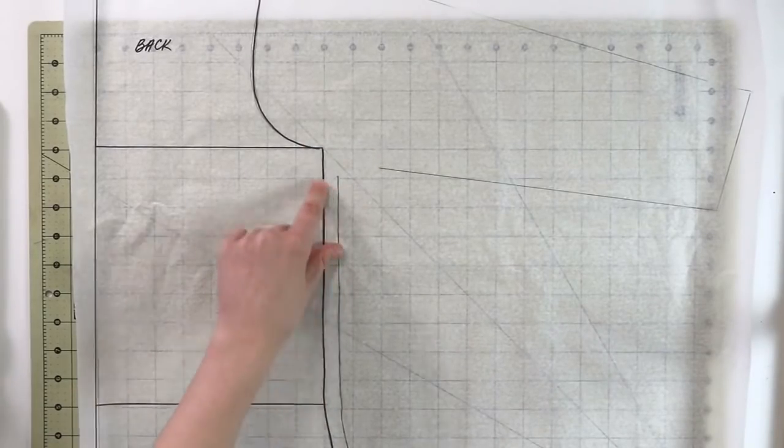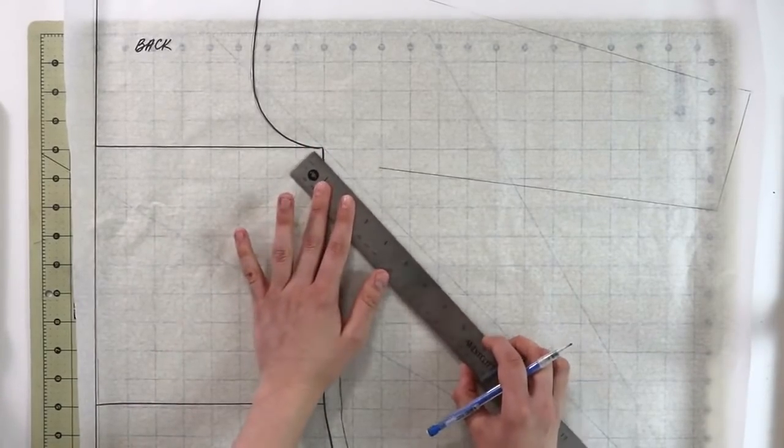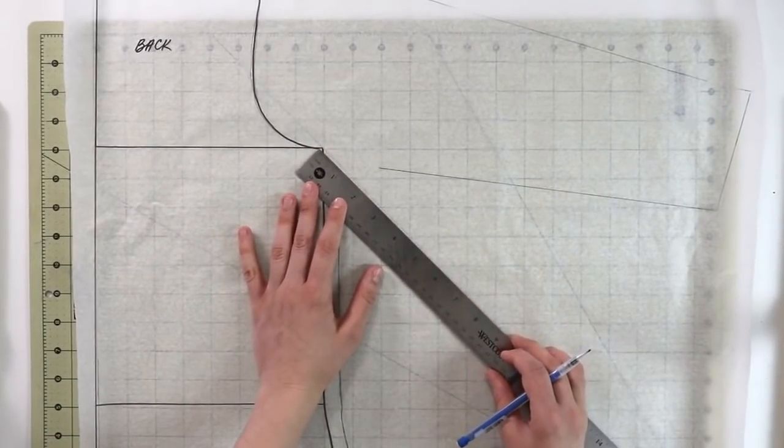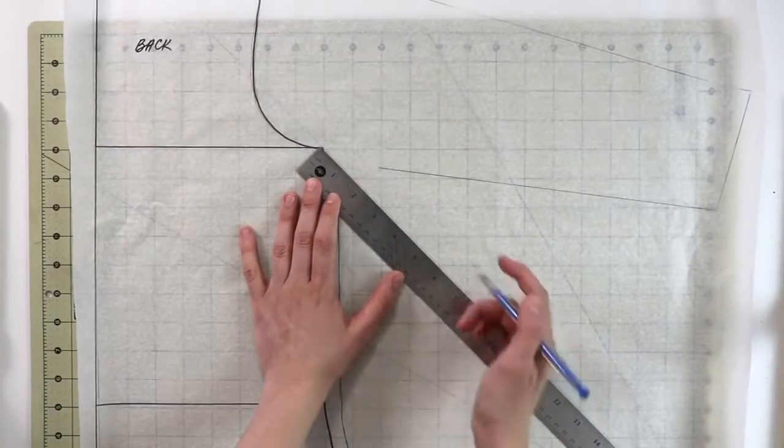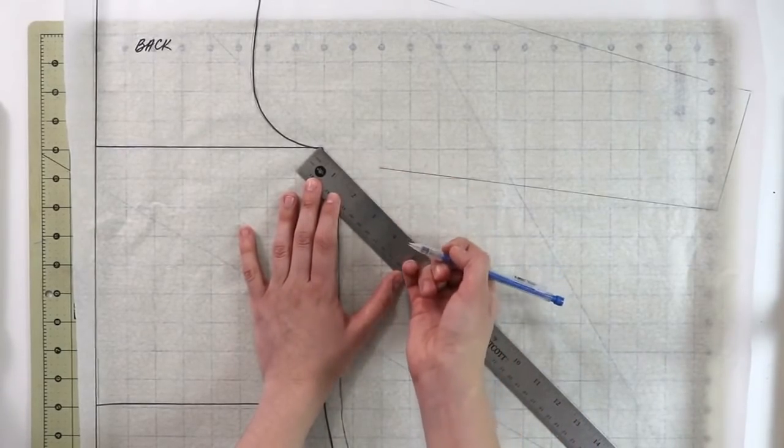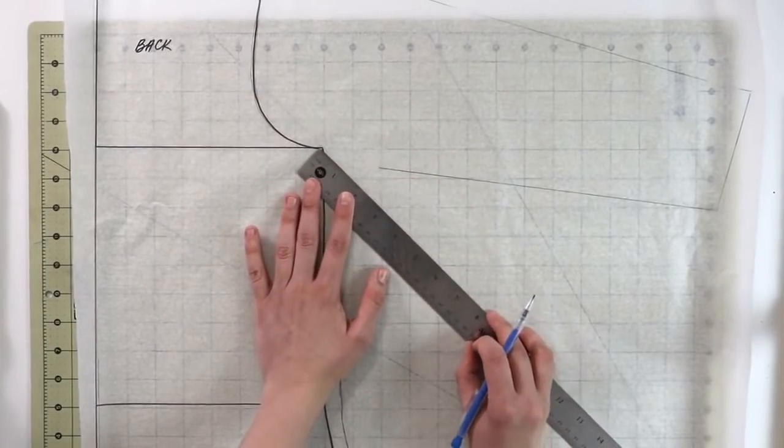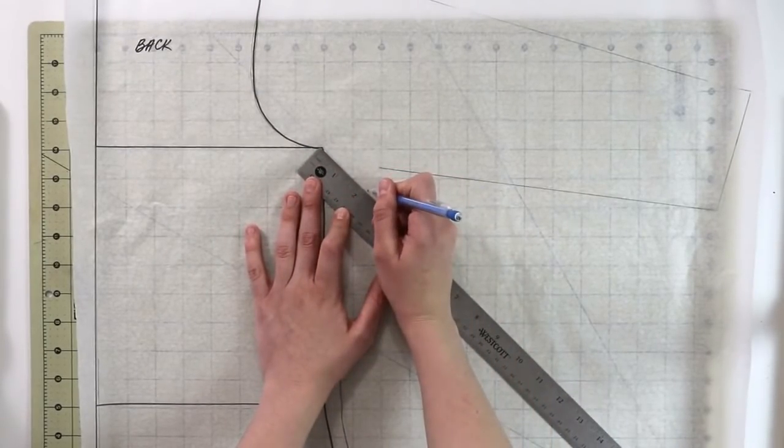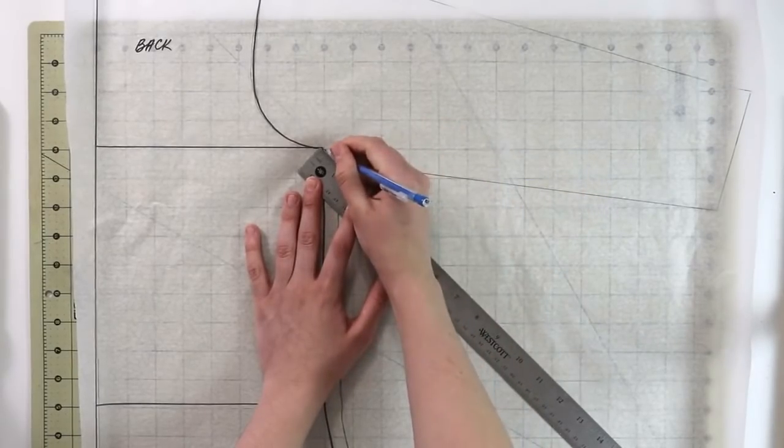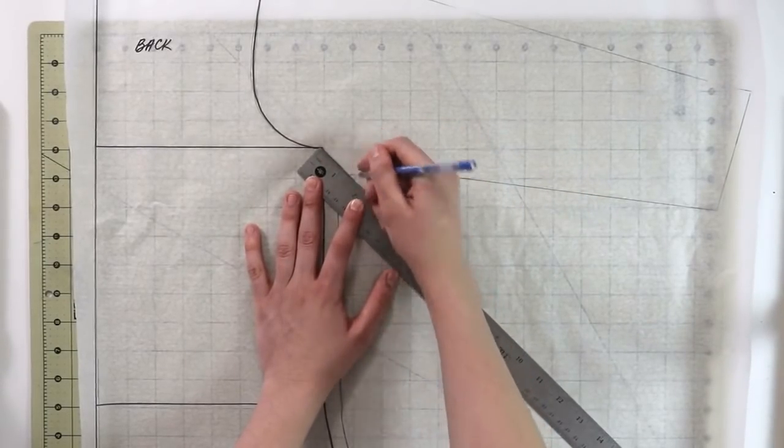Now about the underarm section. At a 45 degree angle right over here, approximately, it doesn't have to be exact, go ahead and take about an inch and a half, maybe two inches, just really depends on how wide you want this part to be. So in this case, let's go ahead and do an inch and a half. There we go.